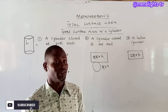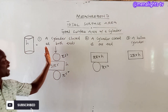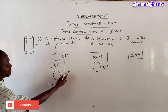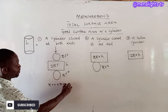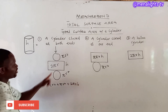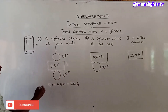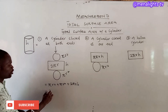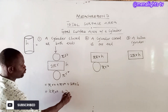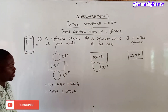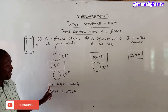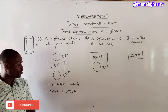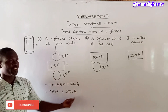Coming back to the cylinder closed at both ends, we have πr² plus another πr², plus 2πrh. Since there are two πr² terms, we can write this as 2πr² plus 2πrh.